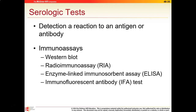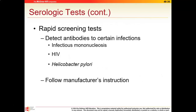The ELISA test is used in the initial screening for HIV. However, that test is sometimes falsely positive, so there is a confirmatory test called the Western blot, which is done to confirm if the ELISA is positive. They have also developed rapid screening serologic tests where you actually detect antibodies to certain specific types of infections. We will be doing the H. pylori test in class.